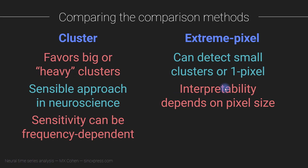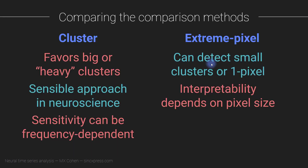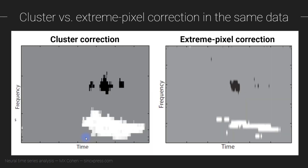With extreme pixel correction, interpretability — particularly the single-pixel issue — depends on pixel size. If pixels are actually quite large, interpreting one pixel may be safe and reasonable. But if pixels are tiny, like one millisecond by one hertz, then a single significant pixel is hard to believe will replicate in an independent sample. A disadvantage of cluster correction is that sensitivity can be frequency-dependent: in time-frequency analyses there tends to be more smoothing at lower frequencies and less smoothing at higher frequencies.